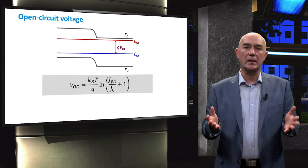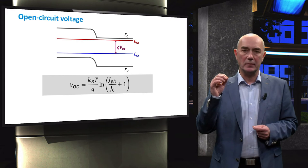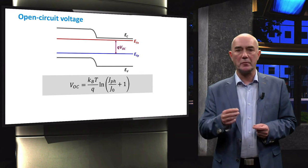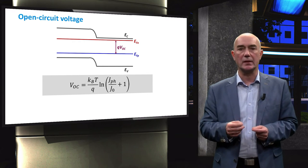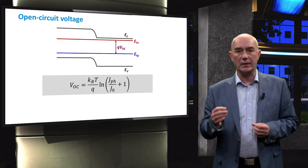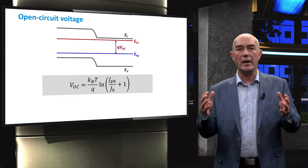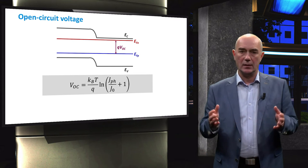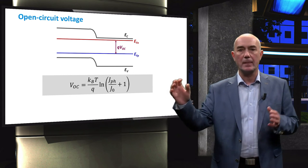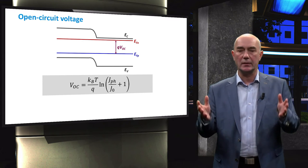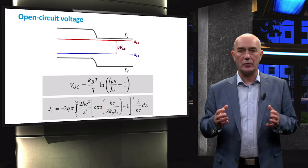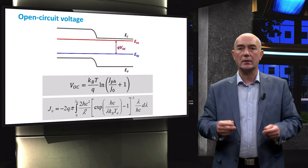This lowest possible value can be determined when we neglect all recombination processes except one. This is the recombination process that is responsible for emission of radiation when a solar cell is considered as a blackbody. We discussed blackbody radiation with reference to the Sun way back in the beginning of this course. A solar cell will absorb energy from light, and some of that energy will inevitably be radiated because the solar cell is at a higher temperature than zero Kelvin. We can calculate this J0 value through this equation. I will not go through it in full.